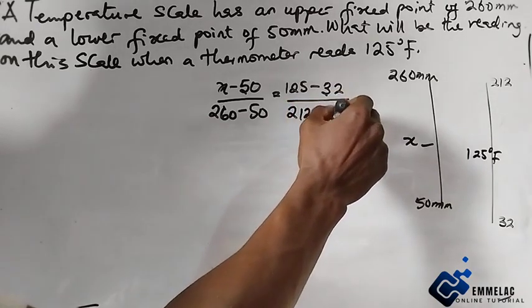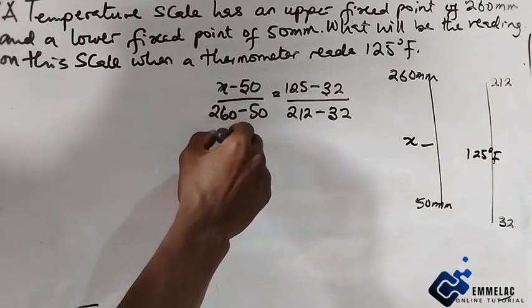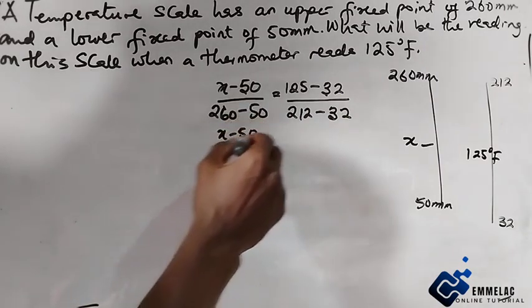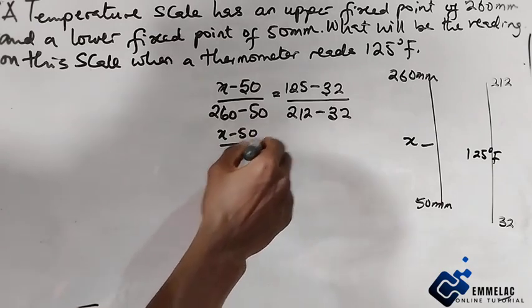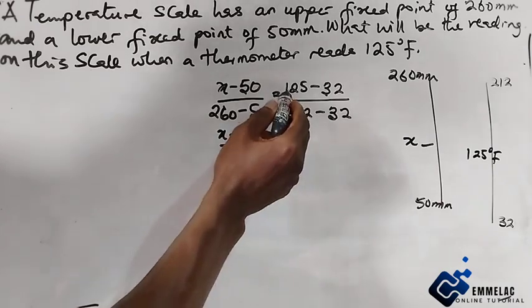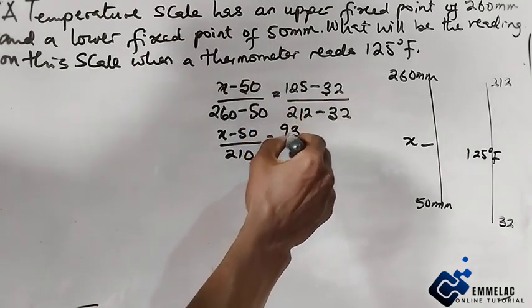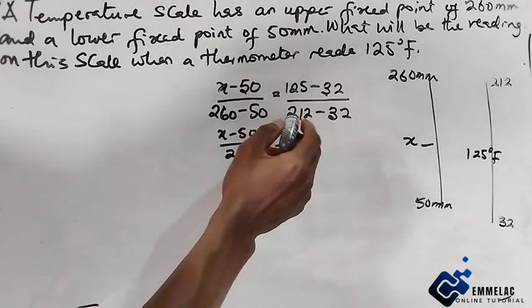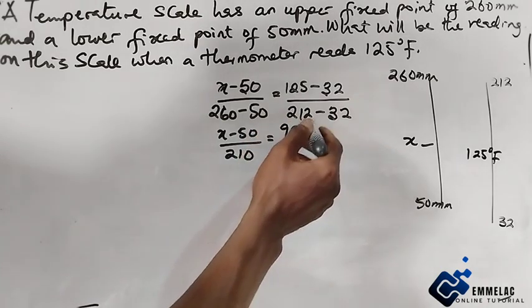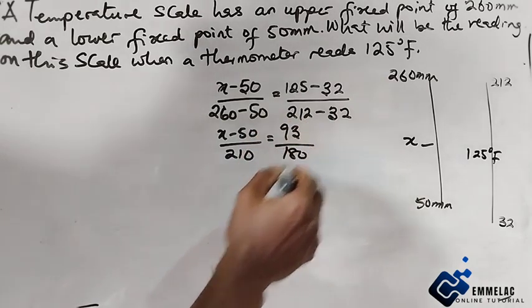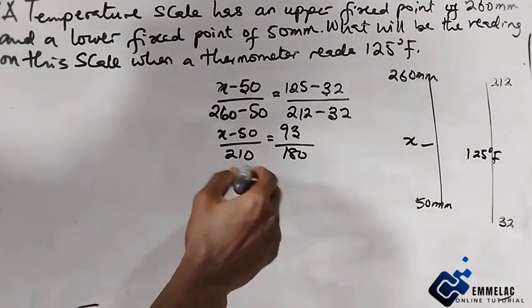Here we have that x minus 50 over 210 equals 93 over 180. Let us cross multiply. We have 180 times (x minus 50) equals 93 times 210.